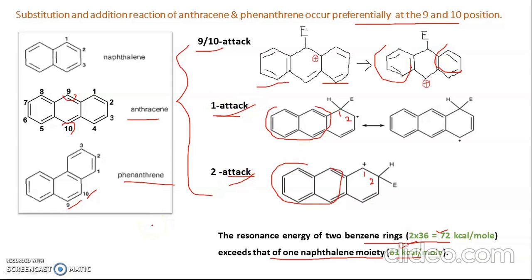That covers orientation for polycyclic aromatic compounds. In the next video, I will start discussing the six important electrophilic aromatic substitution reactions in detail — it will likely take more than one video. If you found this helpful, please like, share, and subscribe. We will meet in the next video. Goodbye and thank you for your time.